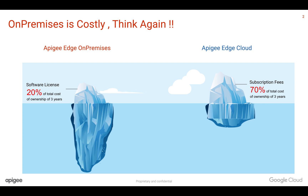If you plan to use Apigee Edge on-premises, then you have to worry about hardware cost — you have to procure the hardware, set it up, get the power requirements, and make sure the hardware is up and running all the time. Then you have to worry about hardware maintenance, making sure it is up at all times, and investing resources to maintain it. You also have to handle support considerations, and install and operate the Apigee Edge software on these machines, taking care of maintenance like upgrading and installing patches.